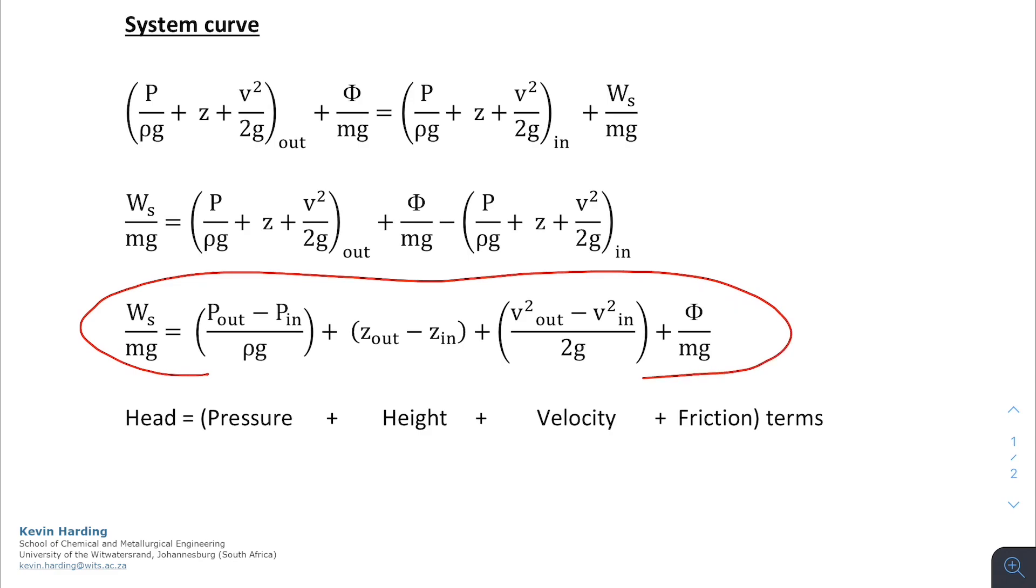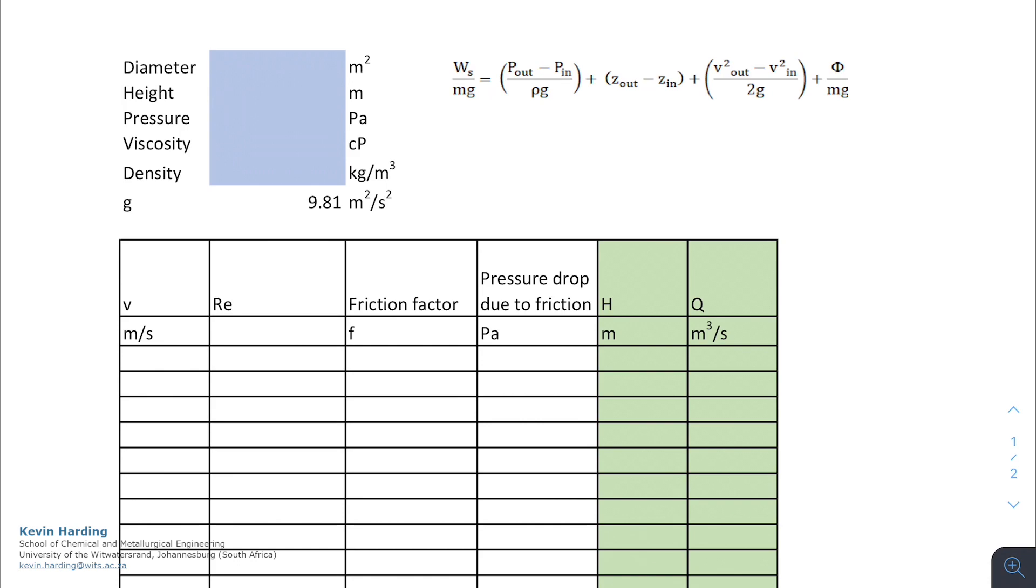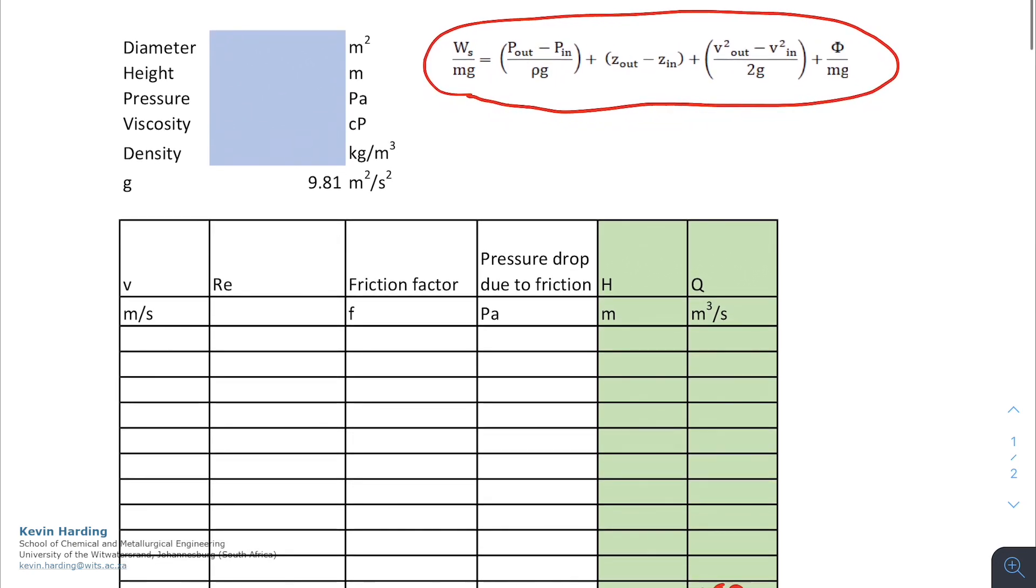What we want to do with this final equation is we now want to plot the head, which will be H, on the y-axis against the volumetric flow rate, which was Q. The way I typically solve this equation, and I've copied it here again, is to use Excel, which makes the formulas a whole lot easier.